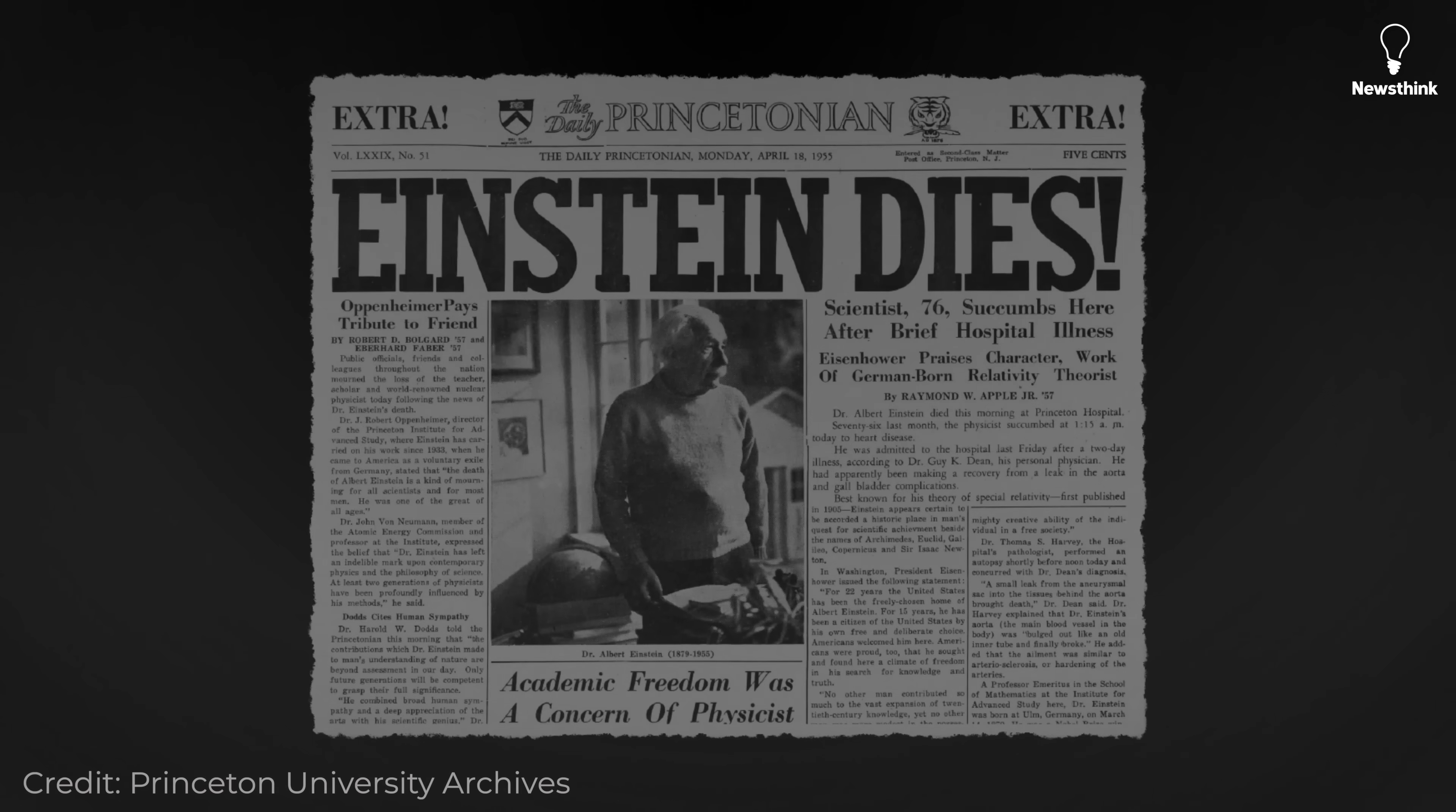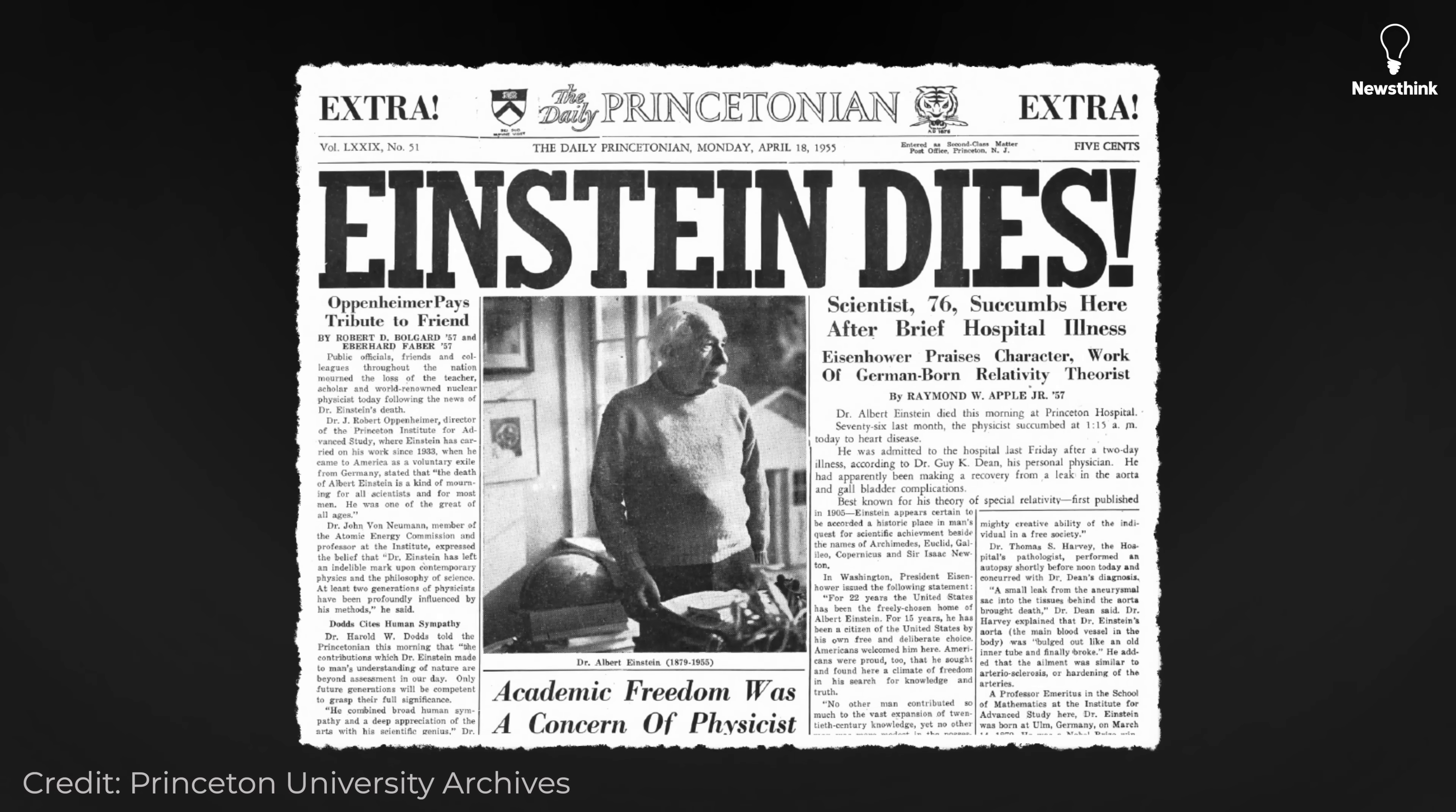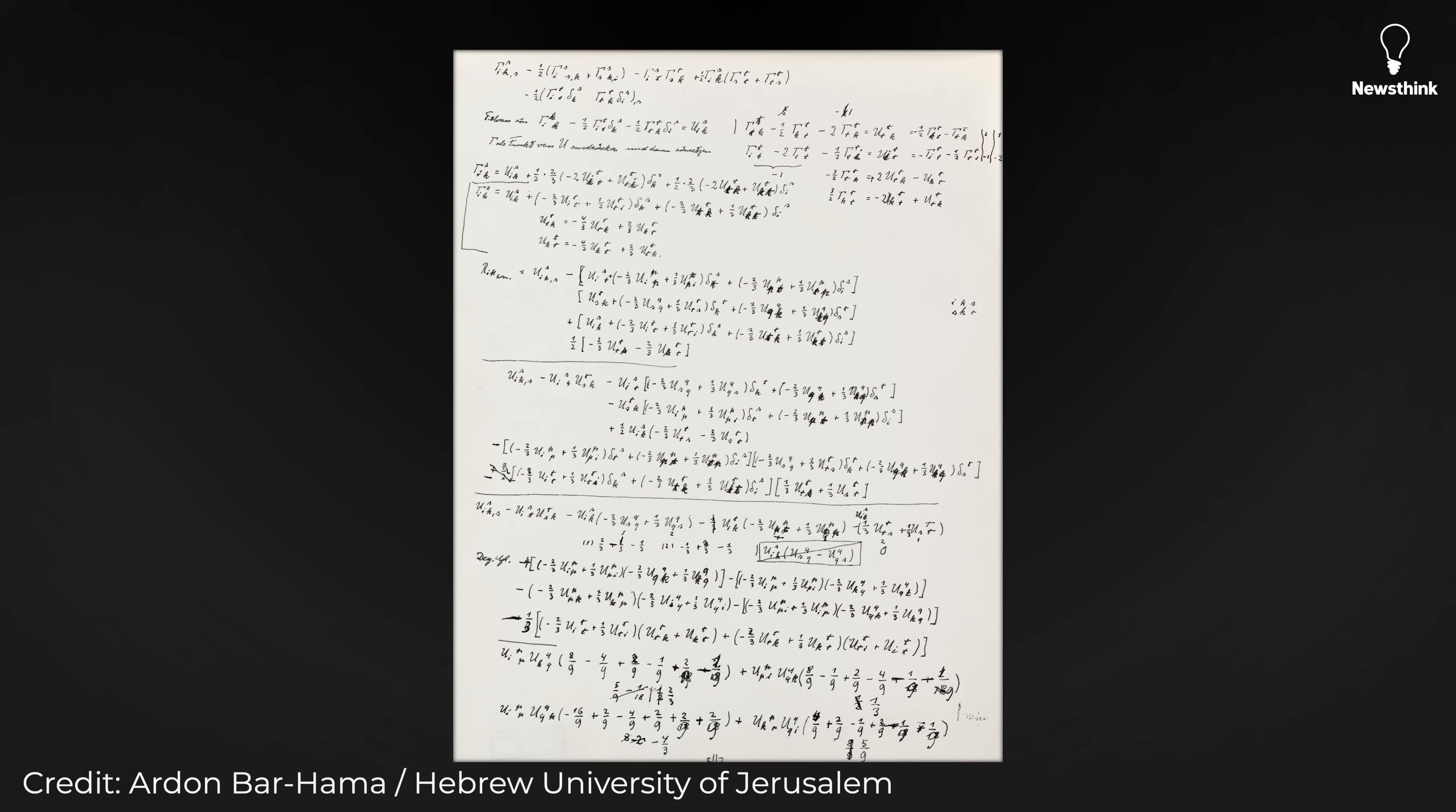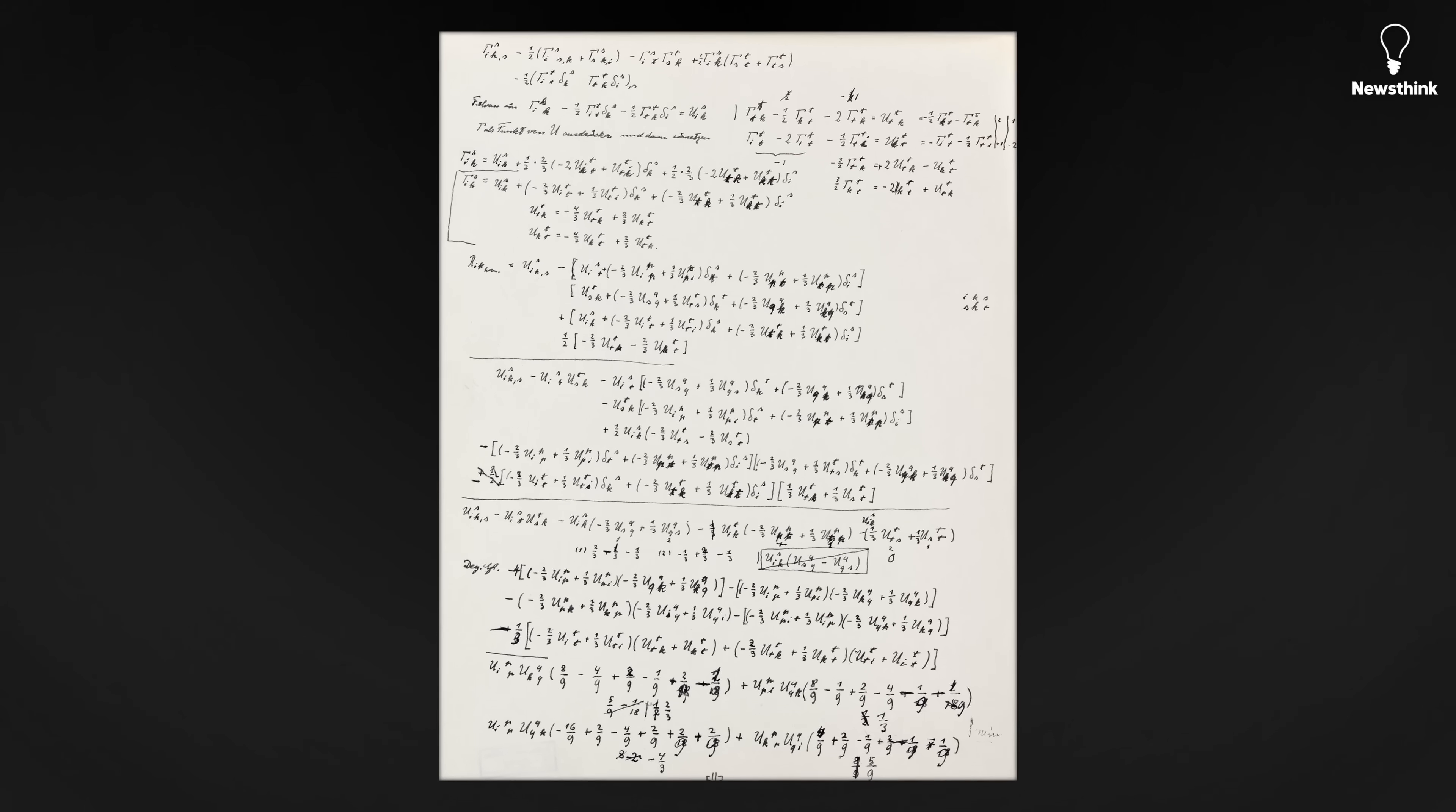Shortly after 1 a.m. on April 18, 1955, his aneurysm burst. A nurse heard him blurt out a few words in German that she couldn't understand. Einstein died at the age of 76. At his bedside lay 12 pages of equations, his final attempt to capture the elusive field theory that had consumed the last three decades of his life.